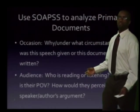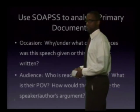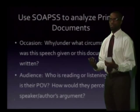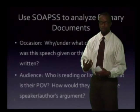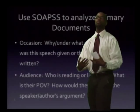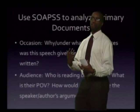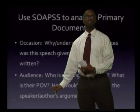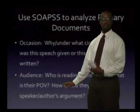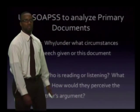O is occasion — under what circumstances was this speech given or this document written? A is audience — who's reading or listening to this? Things aren't written or spoken or painted in a vacuum; generally it's always for an audience. From looking at the document, do we get a sense of who this audience is? What is their POV — point of view — of not just the author but also the audience, and how would they perceive the speaker's argument?